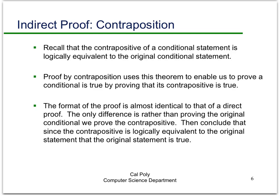And as you'll see in the next couple of examples, the format of the proof is almost identical to that of a direct proof. The only difference is rather than proving the original conditional, we prove the contrapositive. And then we're able to conclude that since the contrapositive is logically equivalent to the original statement, the original statement is true since the contrapositive is true.